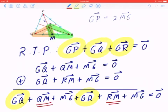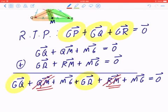And from the diagram, you can tell that QM and RM are opposite vectors. And when you add opposite vectors, they become 0.